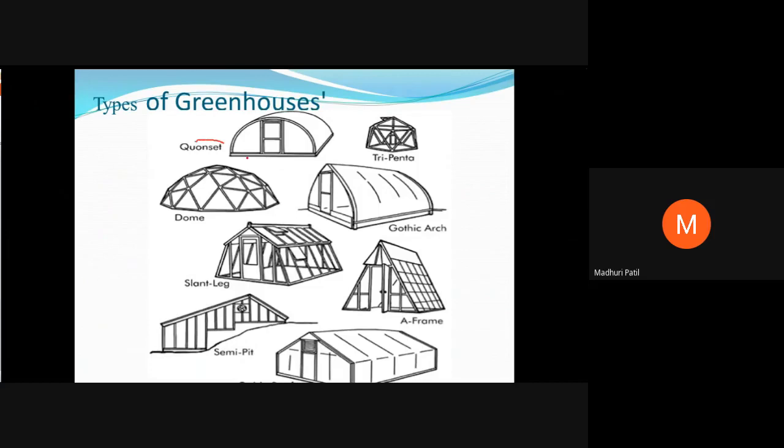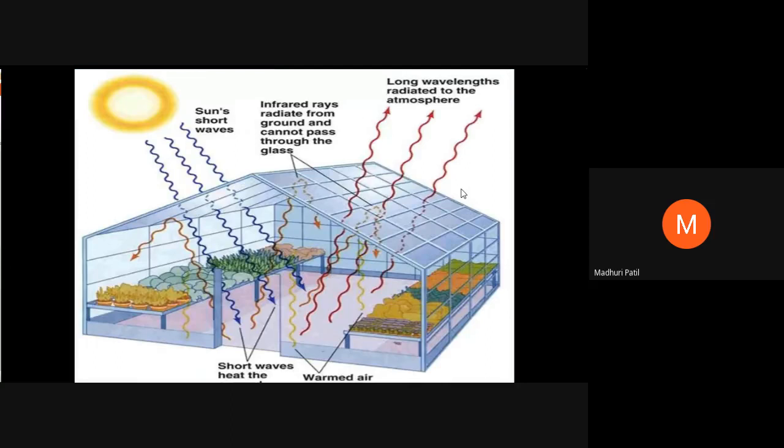The different types of greenhouse include the dome-shaped, slant leg, semi-pit, frame, gothic arch, and dry penta designs. There are many types depending upon the availability of place.